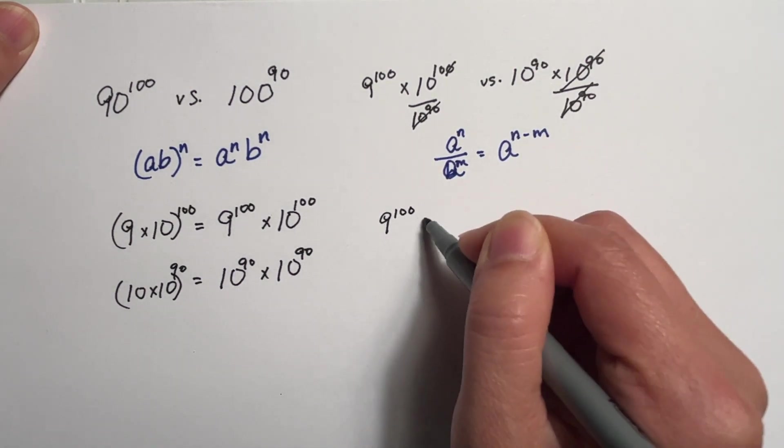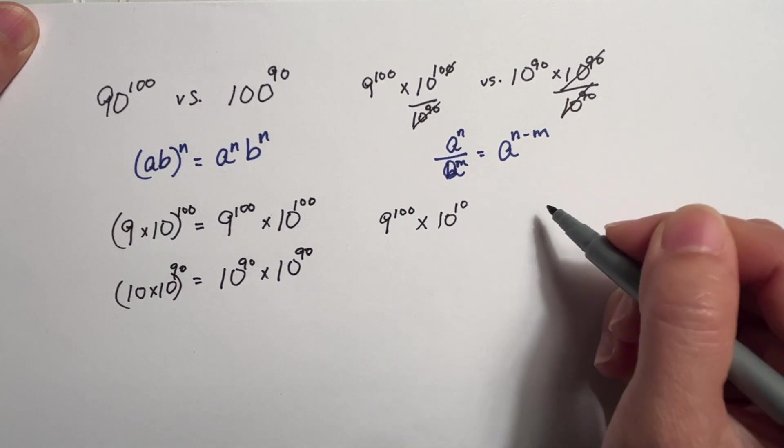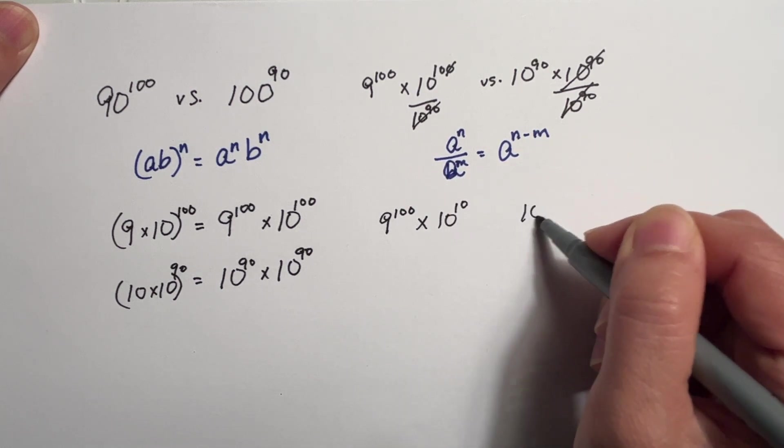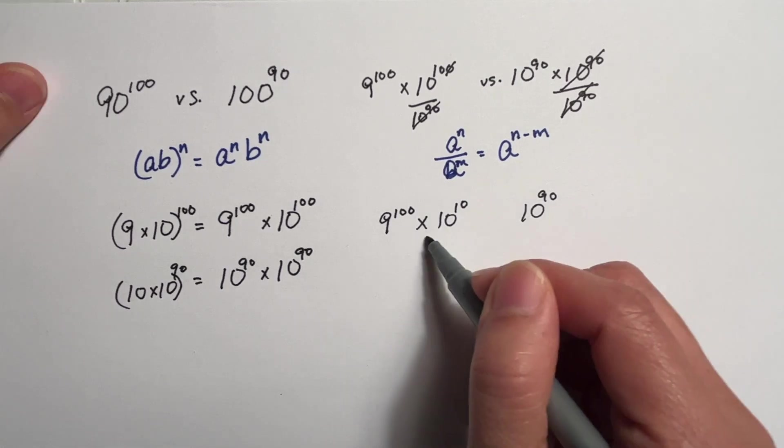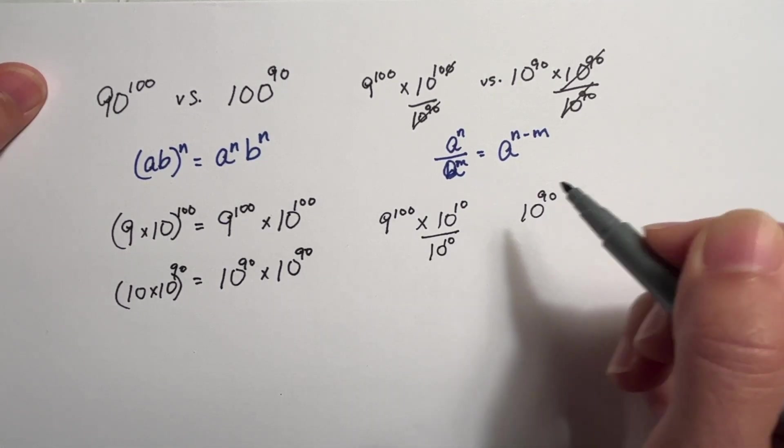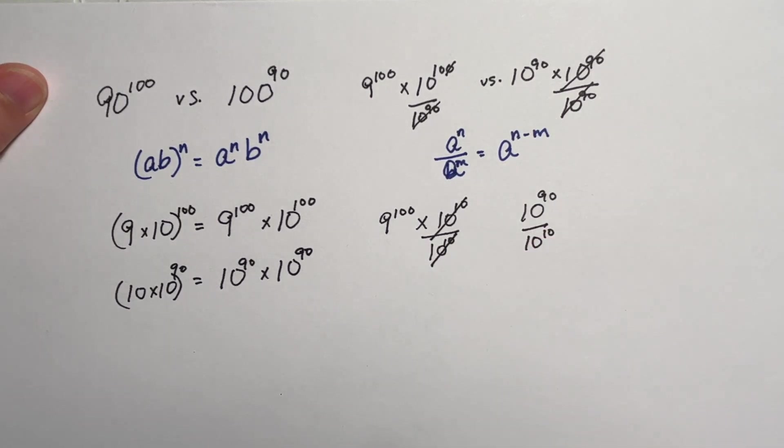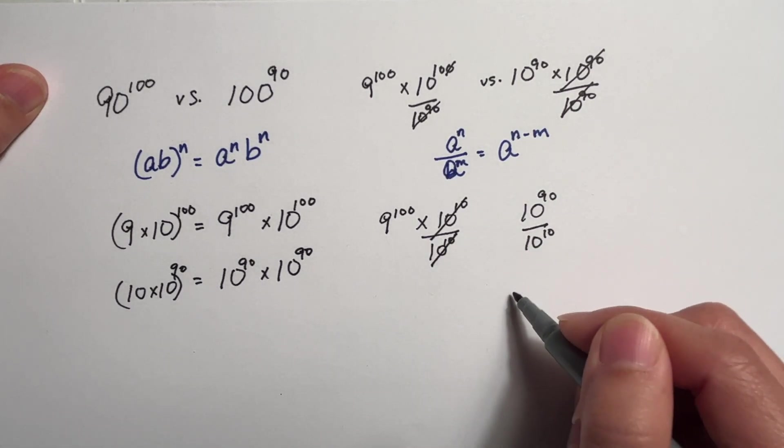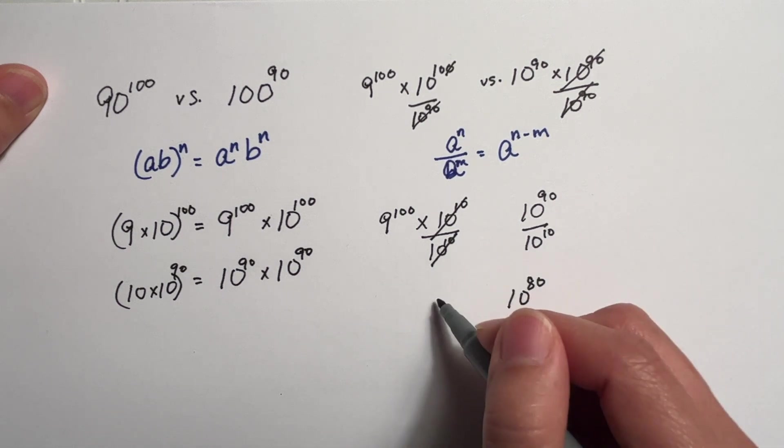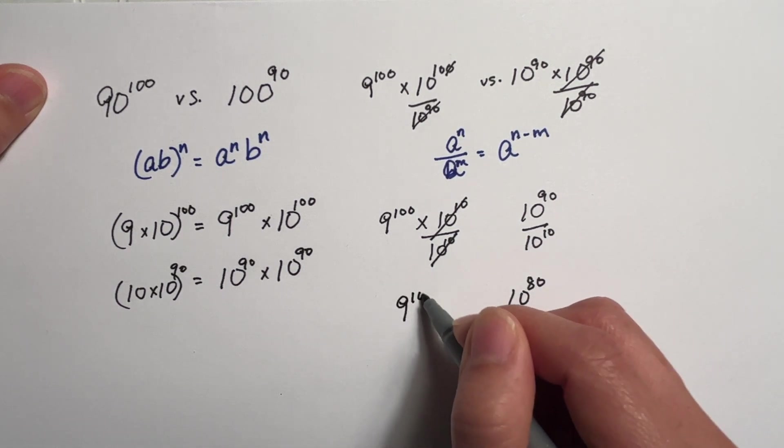So now we have 9 raised to the 100 times 10 raised to the 10 versus 10 raised to the 90. Now here we can divide by 10 raised to the 10 on both sides. This will cancel out. This will become 10 raised to the 80 versus 9 raised to the 100.